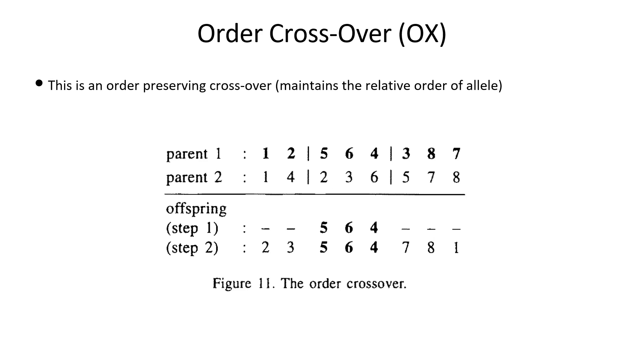Order crossover OX is quite similar to PMX but it doesn't preserve the absolute position. Rather, it tries to preserve order. Same as PMX, the values 5, 6, 4 are copied to the offspring. Then from parent 2, the values after the partial segment are copied to the offspring after the segment itself in order, but we drop any duplicates. Note that we get one offspring by this. Then swapping parent 1 and parent 2, we will get the other offspring.